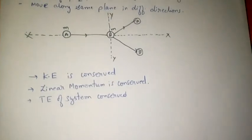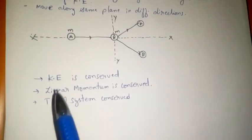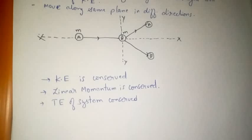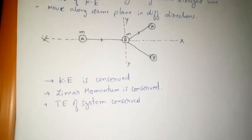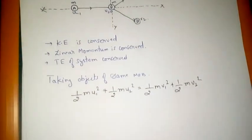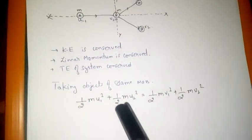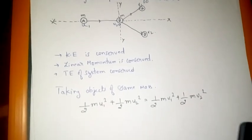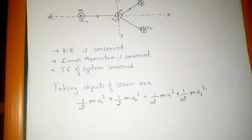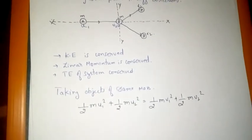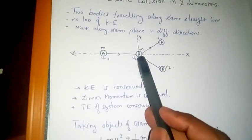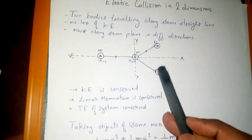In elastic collision, kinetic energy is conserved, linear momentum is conserved, and total energy of the system is conserved. We will consider only kinetic energy here. We will discuss the same mass case, because with different masses we would be left with only three equations and four unknown variables, making it impossible to solve. The initial condition is that object A is moving with velocity u1 and object P is at rest.